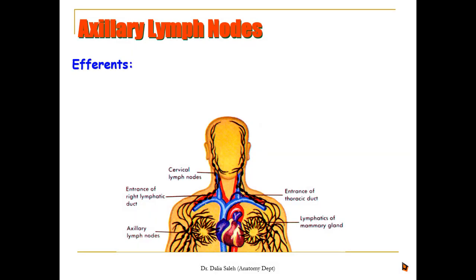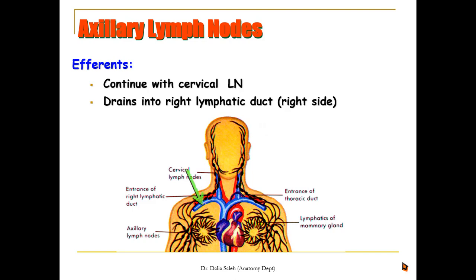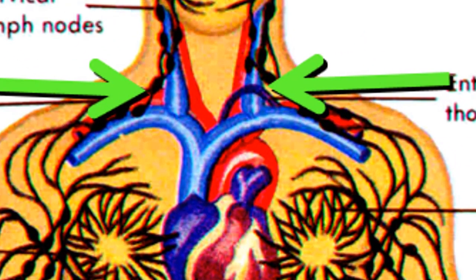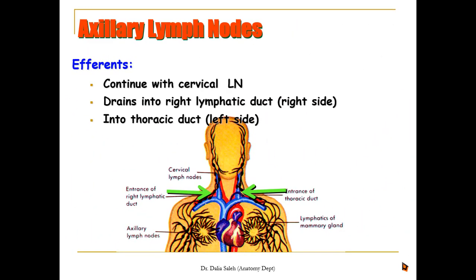The efferent lymph vessels from the axillary lymph nodes continue with the cervical lymph nodes and drain into either the right lymphatic duct on the right side of the body, or the thoracic duct on the left side. Both terminate at the junction between the internal jugular and subclavian veins, thus returning the lymphatic drainage back to the circulation. This concludes the presentation.